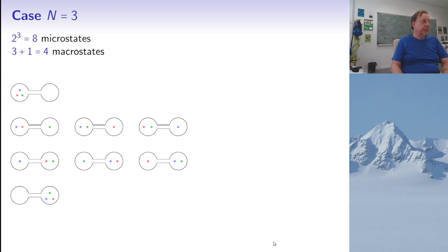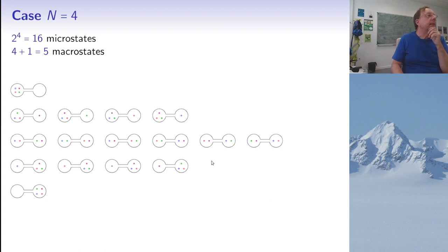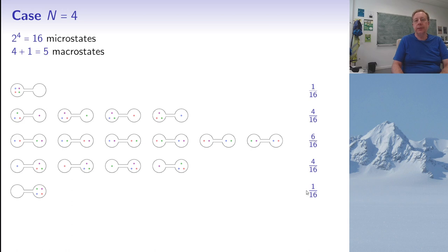For three particles there are 2³ = 8 microstates and 4 macrostates, with probabilities 1/8, 3/8, 3/8, 1/8. For four atoms there are 2⁴ = 16 microstates and 5 macrostates, with probabilities 1/16, 4/16, 6/16, 4/16, 1/16. You can see that the more likely macrostates are those where the number of atoms in each container is similar; the more the counts differ, the less likely that macrostate is.